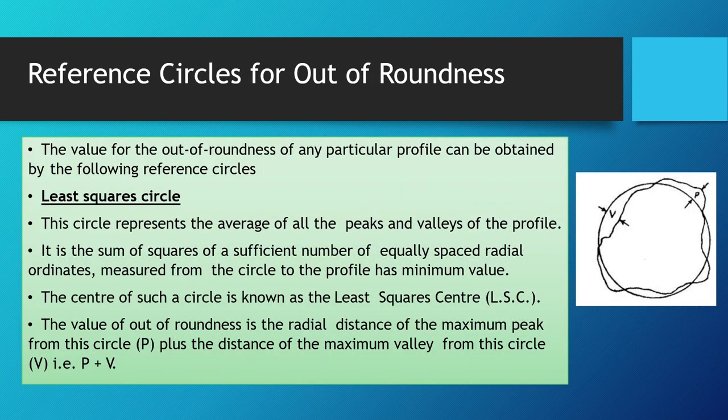Reference circles are used to find the value of out-of-roundness. The first is the least square circle, which represents the average value of all the peaks and valleys of the profile. It is the circle for which the sum of squares of a sufficient number of equally spaced radial ordinates measured from the circle to the profile has the minimum value. The center is known as the least square center (LSC), and the value of out-of-roundness is the maximum peak distance P plus the maximum valley distance V.